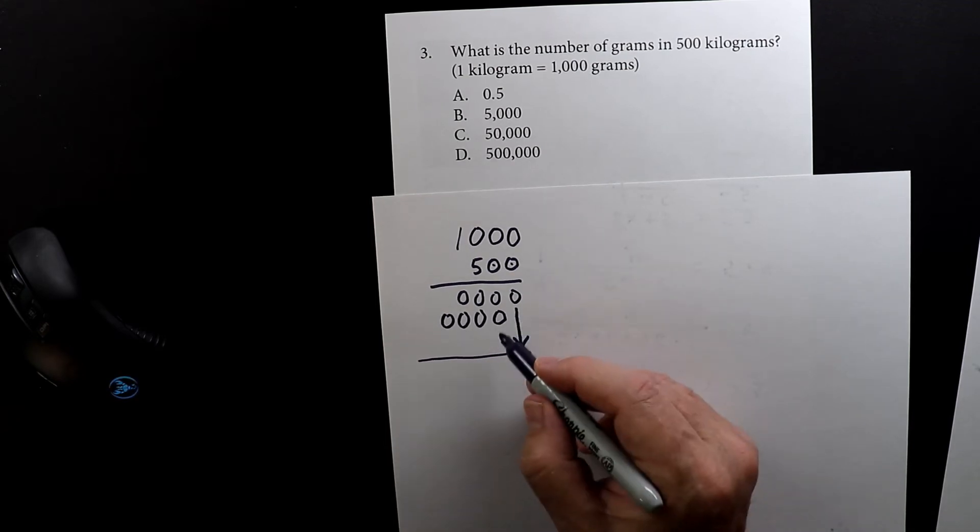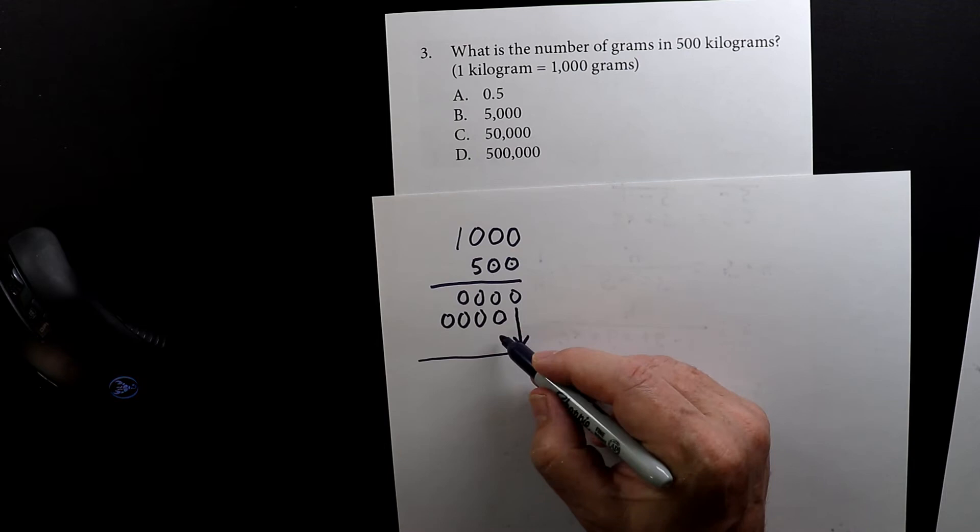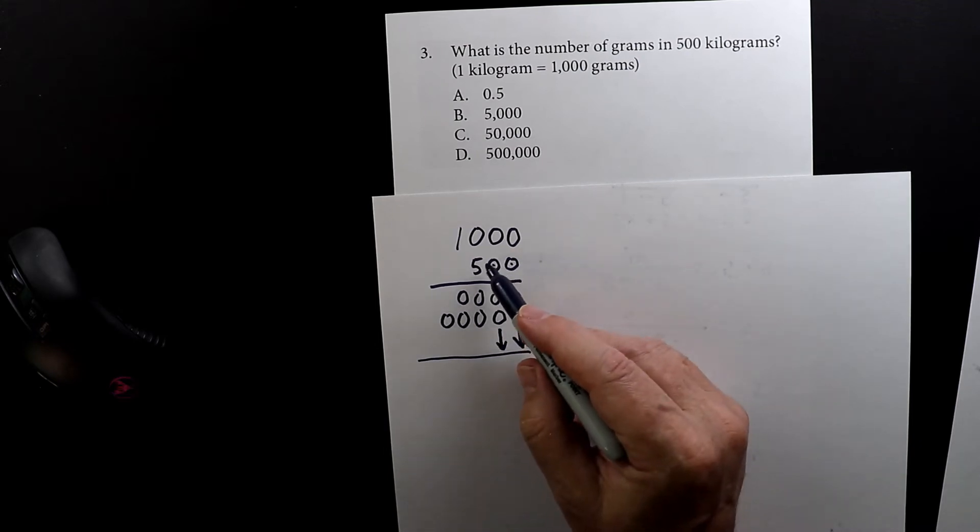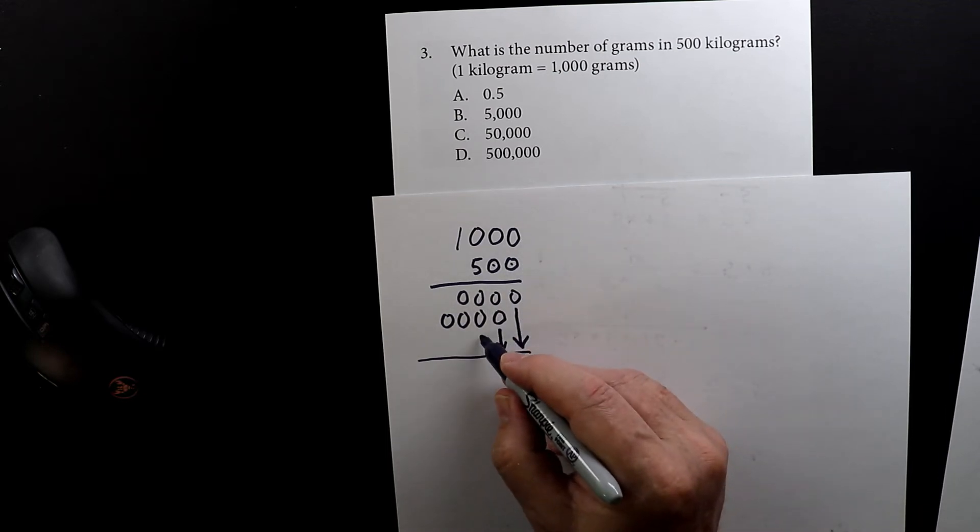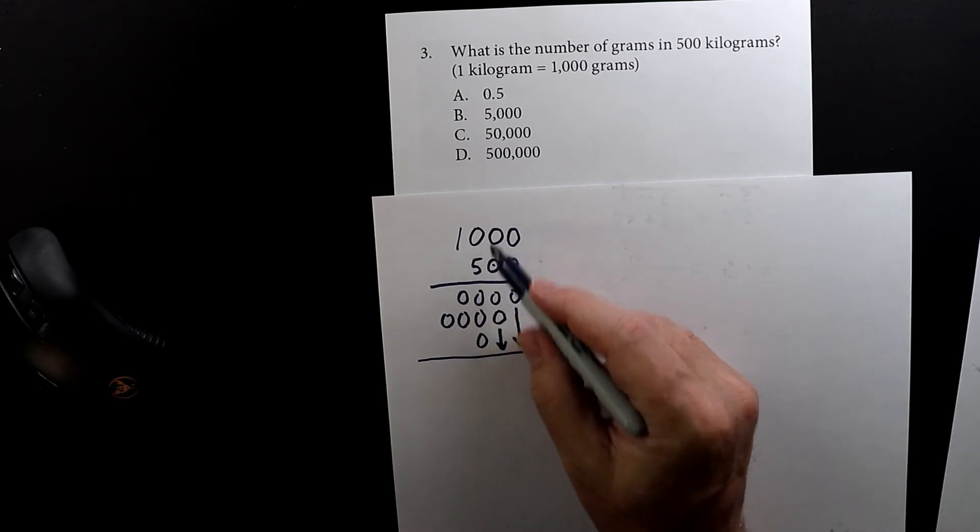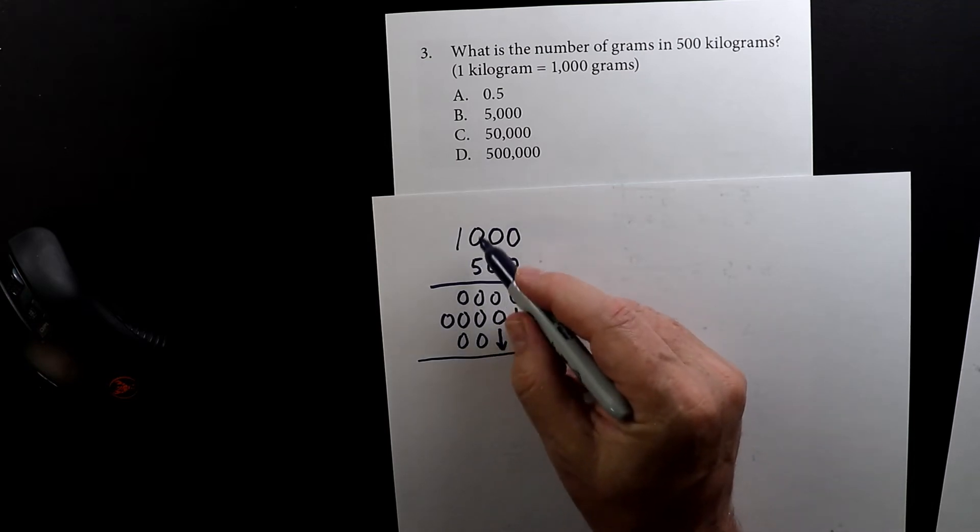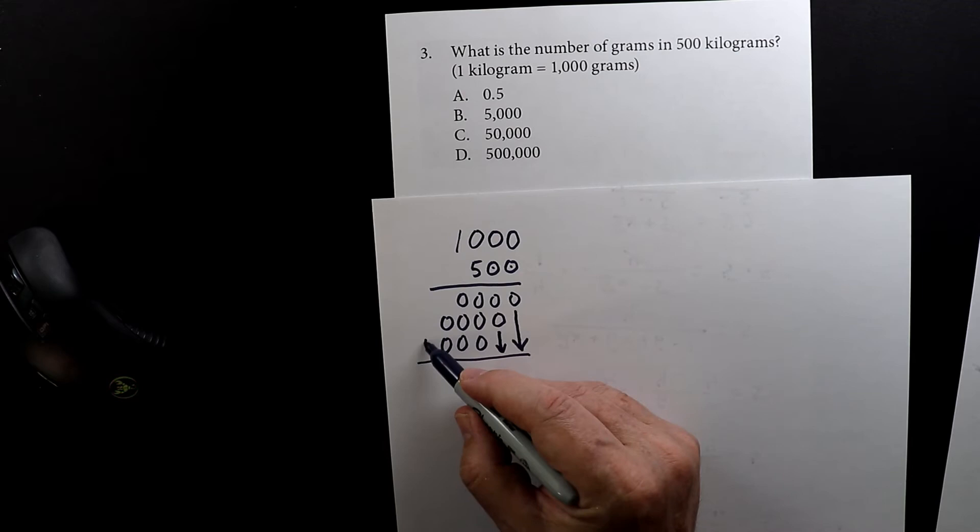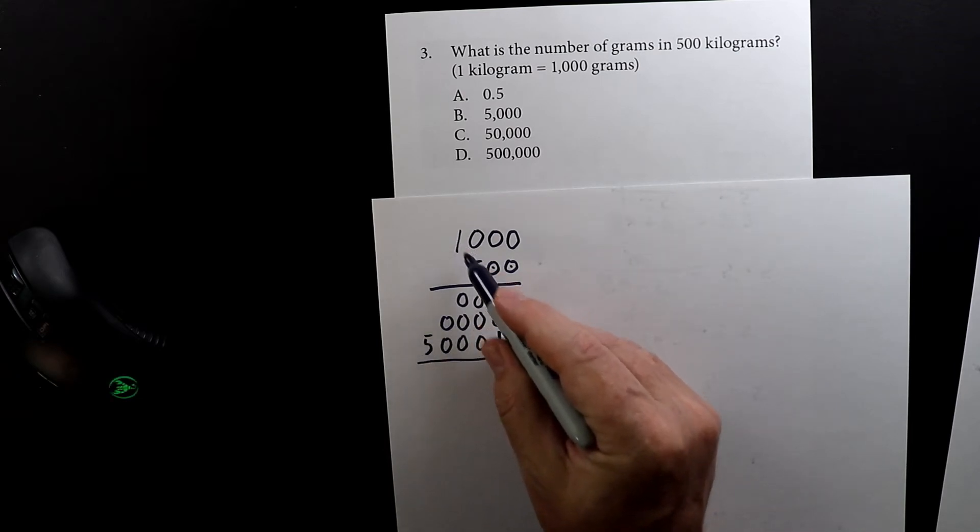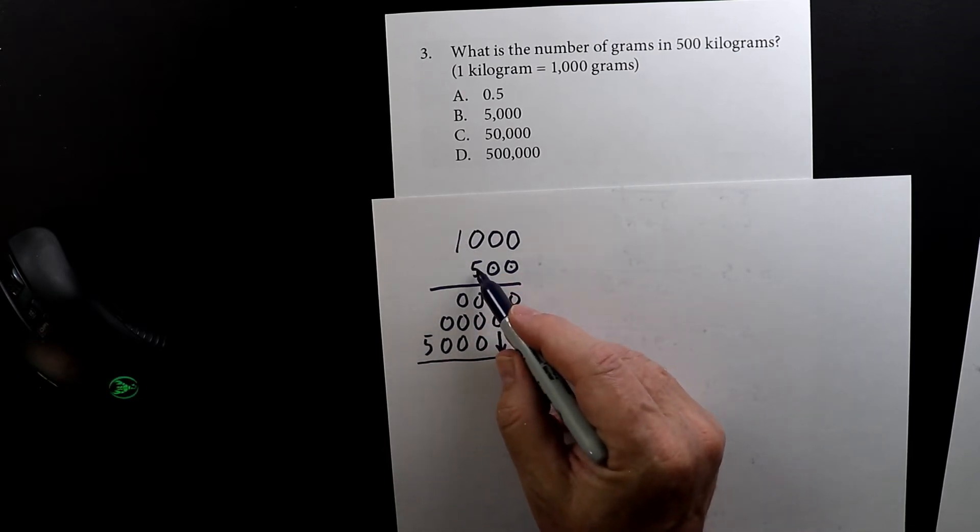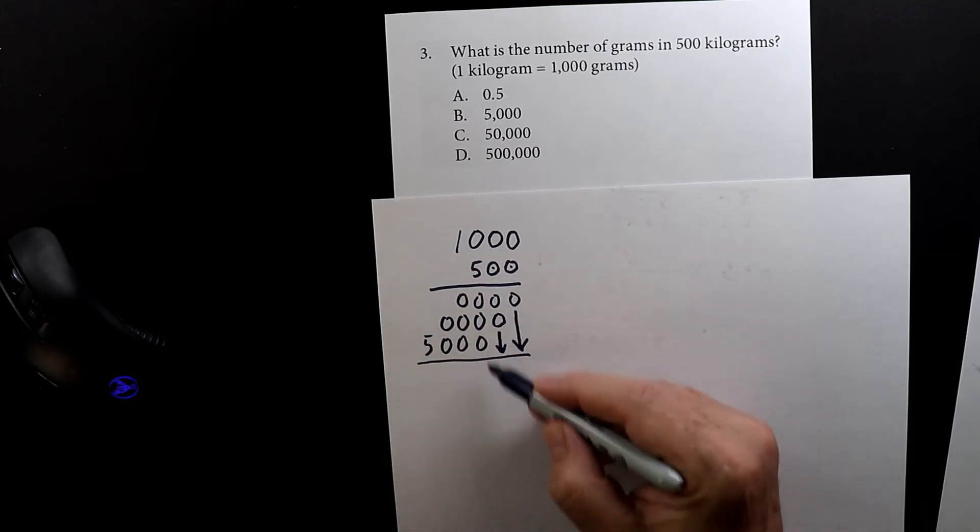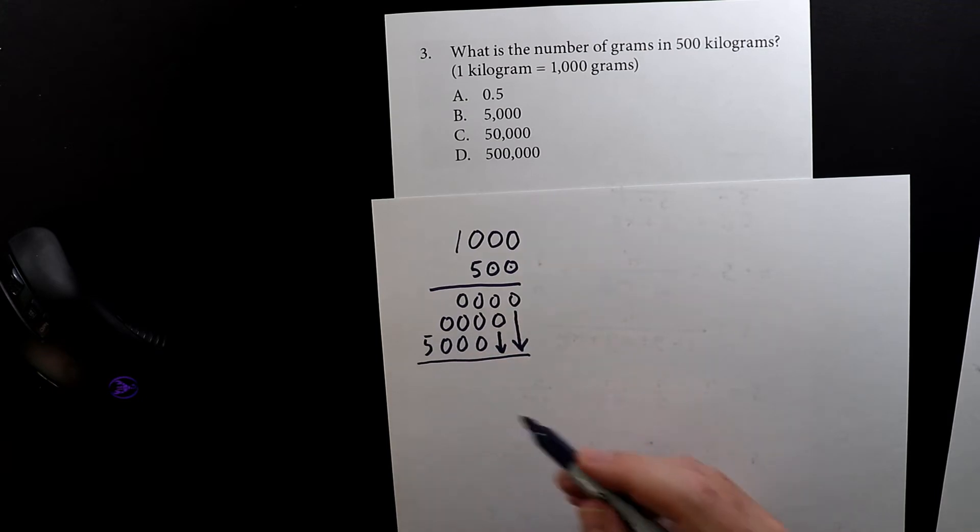So I know I did a lot of zeros there, but that's okay. Again, I need to put a little arrow to move over one, and now I'm going to multiply by five. Five times zero is zero, five times zero is zero, five times zero is still zero, and then five times one is five.